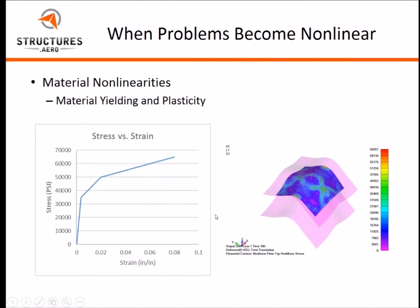Another thing is material nonlinearities. In addition to the geometry, you might run into cases where you're outside the linear range of the stress-strain curve and you start going into the yield region. The things that could occur here is even plasticity. We'll be showing today an example of plastic behavior in one of our models with material nonlinearities.